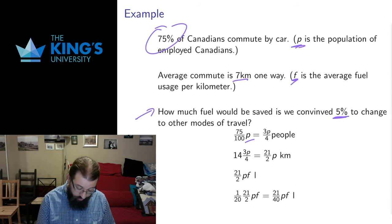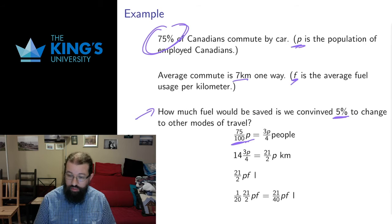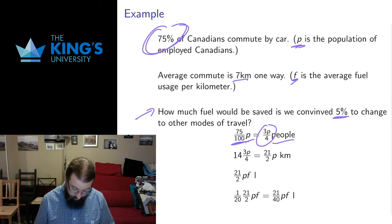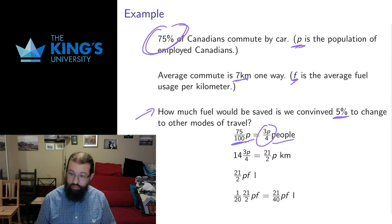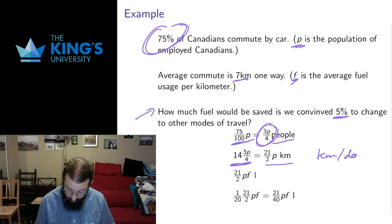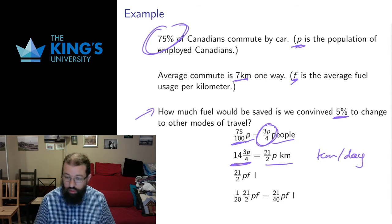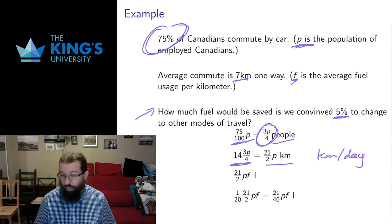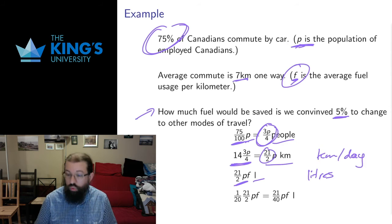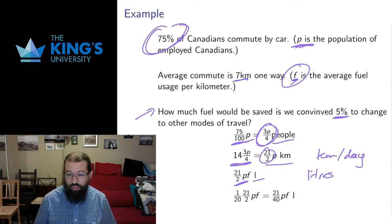Starting with population P, only 75% commute by car — that's 75 over 100, the same as three quarters. So the population of commuters is 3P over 4, and the units are people. The average commute is 7 km one way; people commute there and back, so that's 14 km. I multiply 3P/4 by 14 to get the average kilometres per day. If you wanted kilometres per year, you can multiply by the number of working days per year, but I'll think of this as kilometres per day. And if F is the fuel usage per kilometre, multiplying by F gives me the litres per day — so 21 over 2 times P times F gives the litres per day that these commuters are using.